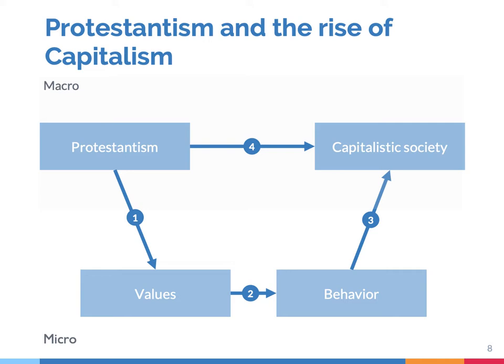In the end, Weber explained the ecological relationship — arrow 4 — with the macro-micro relationship (arrow 1), a micro-to-micro relation (arrow 2), and a micro-to-macro relation (arrow 3). By going into the level of individuals, he was able to make the ecological relationship understandable. In other words, he was able to explain why capitalism emerges in protestant societies.